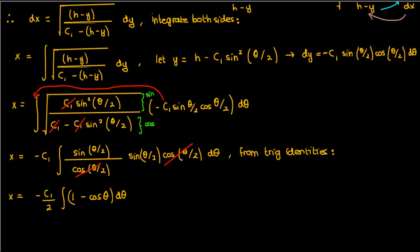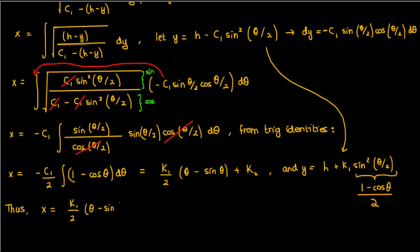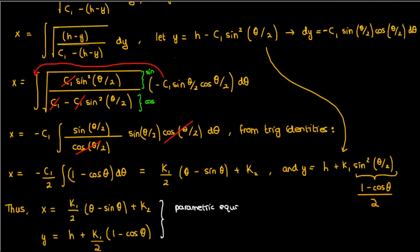This integral is now fairly simple to deal with, because we'll end up with x equals k1 over 2 times (theta minus sine theta) plus k2, where I've replaced the negative c1 by the k1. Now in this case it's rather difficult to express x in terms of just y, so instead of getting a y of x path we'll just leave our x and y in terms of the parameter theta, and we'll get two parametric equations for our brachistochrone curve.